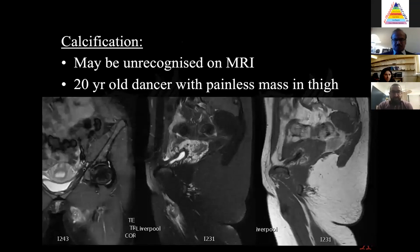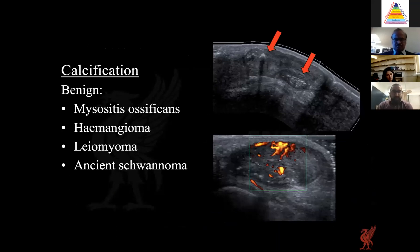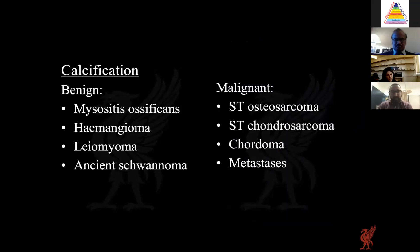Calcification can be hard to identify on MRI. In a 20-year-old dancer with a painless mass in the thigh or groin region, ultrasound revealed regions of calcification — a very bright border on the surface with posterior acoustic shadowing — indicating dense calcification, and this was diagnosed as myositis ossificans. However, caution is advised as both benign and malignant soft tissue masses can contain calcification.